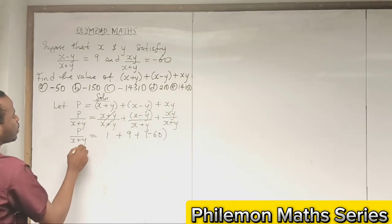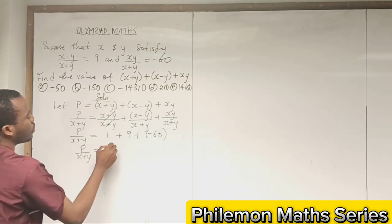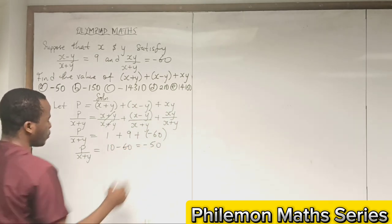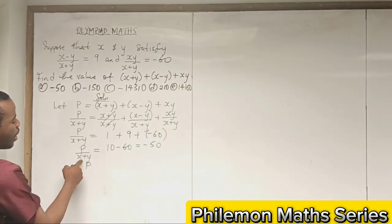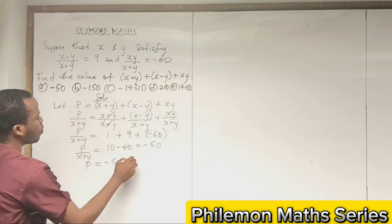So it means that P/(x + y) would be 10 - 60, which is -50. We can multiply through by (x + y), so we have P = -50(x + y).